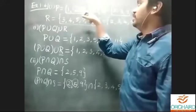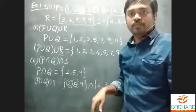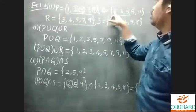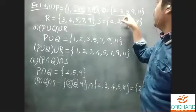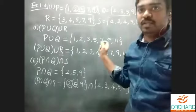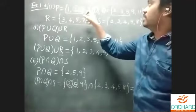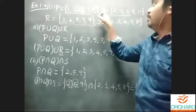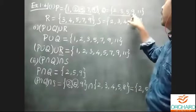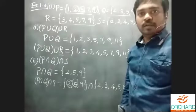The element of set p is {1, 2, 5, 7, 9} and the element of set q is {2, 3, 5, 9, 11}. Write down the elements of set p and q.